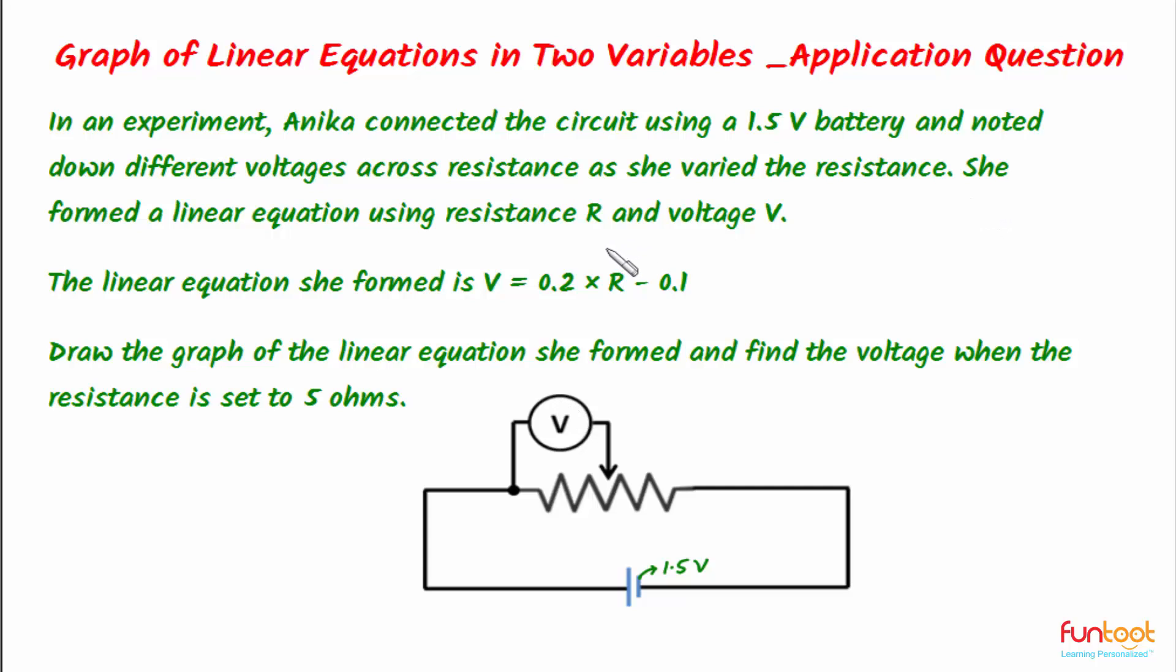Then she formed a linear equation using resistance R and voltage V. The equation she formed was V = 0.2 × R - 0.1. We have to draw the graph of the linear equation she formed and find the voltage when the resistance is set to 5 ohms. This is the equation which Anika has formed, and the variables are V and R. It is a linear equation since its degree is one.